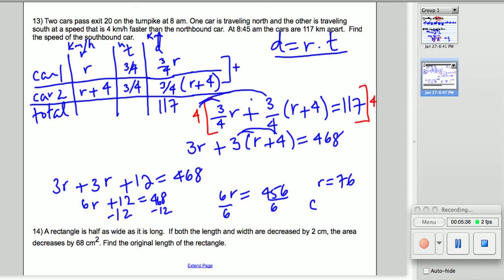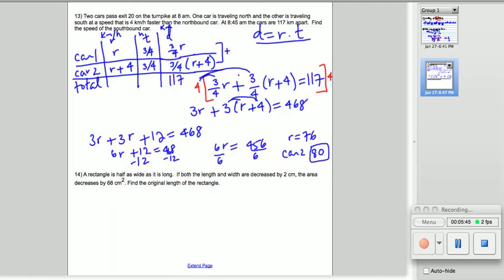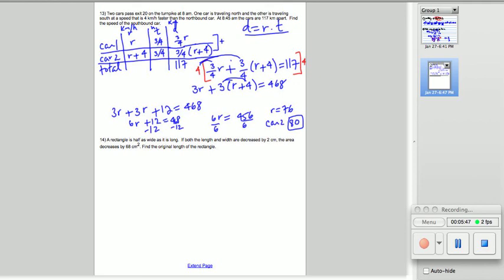So, the speed of car 2 is 80 kilometers per hour. Now, notice that's kilometers per hour. So, that's not very fast. I hope you teenagers don't think that this car is going a lot slower than 80 miles per hour.